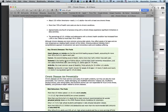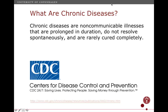Going back to the CDC definition — chronic illnesses, chronic diseases, non-communicable illnesses that are prolonged in duration, do not resolve spontaneously, and are rarely cured completely. If you read that to your father or your partner, you still don't quite know what they are. It's very, very generic.